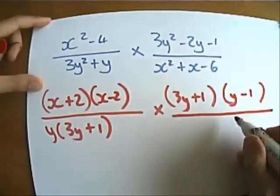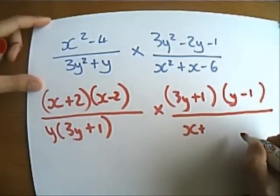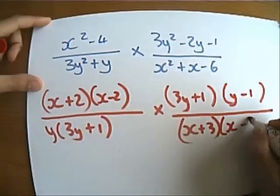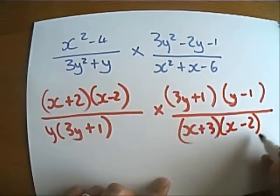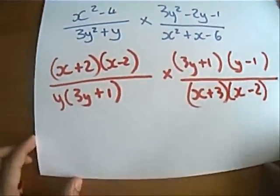And on the bottom here, this is going to be x plus 3, x minus 2. Let's just check, x squared take 2x plus 3x gives me plus 3x, times minus 2 gives minus 4, brilliant, there we go. So I've now factored that fully.